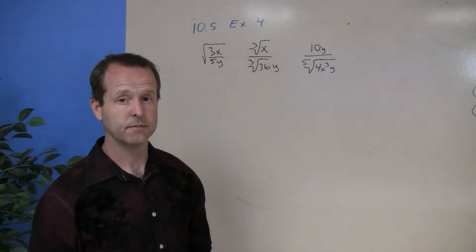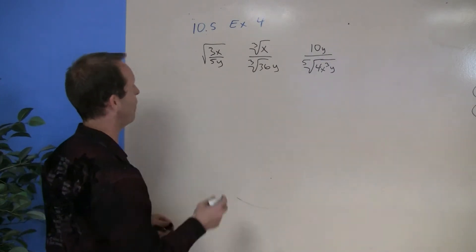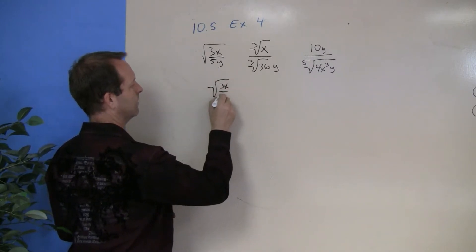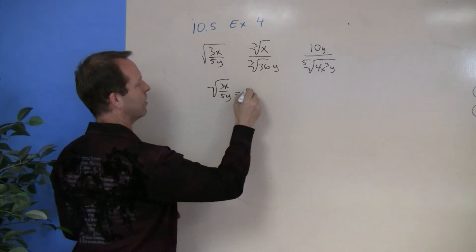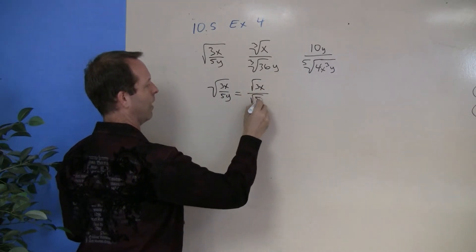Rationalizing some more denominators. The first one we have is the square root of 3x over 5y. First thing I'm going to do is rewrite it as the square root of 3x over the square root of 5y.